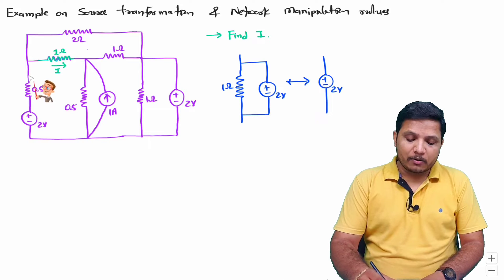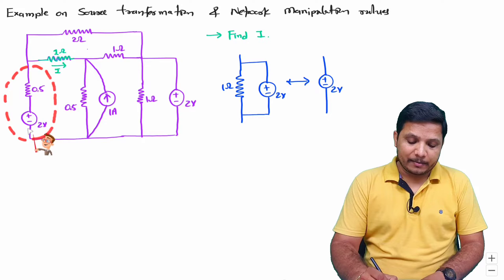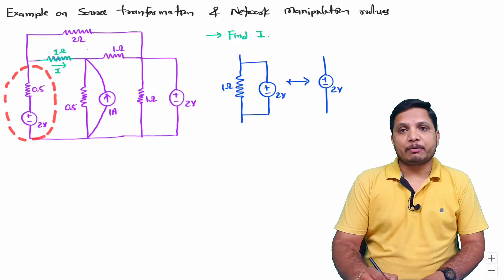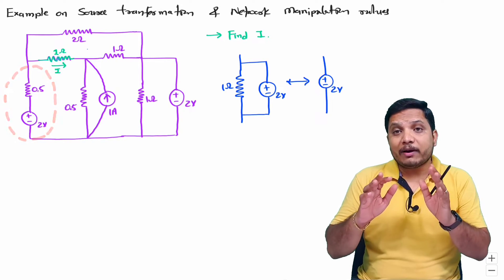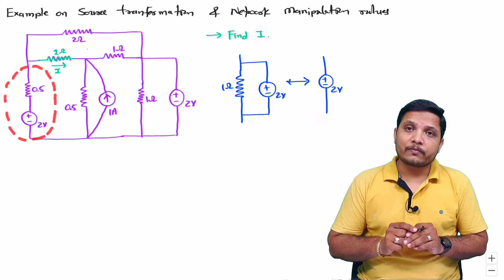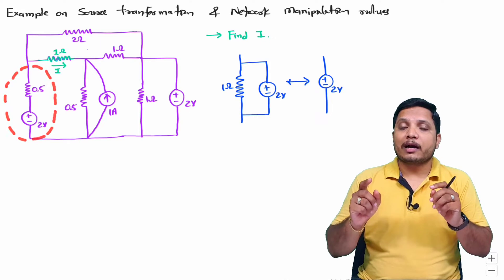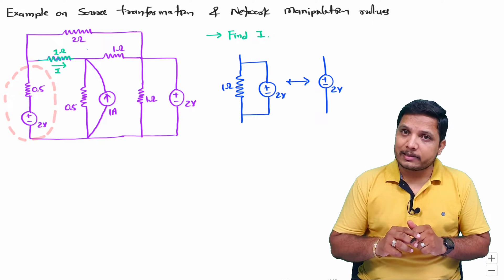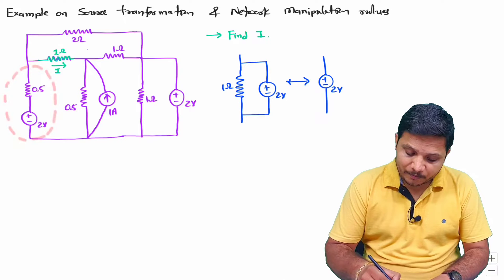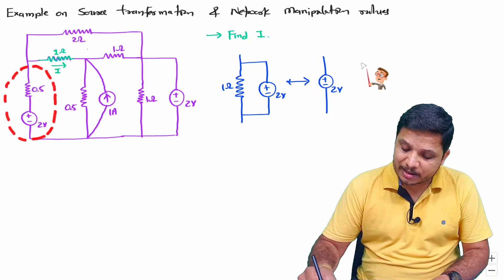Now if you observe, this resistor is connected in series with this two-volt battery. So in that case, we can apply source transformation. Whenever a resistor is connected in series with a voltage source, we can convert that into a current source in parallel with the resistor. Let me show you how this source transformation is happening.